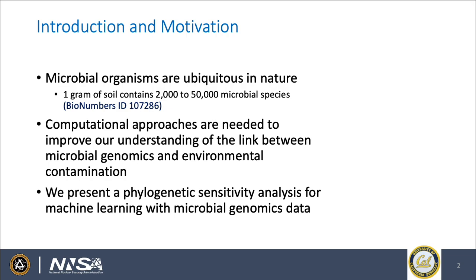We also know that the composition of these microbial communities can be sensitive to different environmental variables, and we're starting to collect more datasets that have both microbial community composition and environmental features like chemical measurements. But what we need now are more computational approaches that help us mechanistically link these two types of measurements — the environmental features with microbial community compositions. We'll present here a phylogenetic sensitivity analysis to help improve machine learning with microbial genomics data to predict environmental variables.